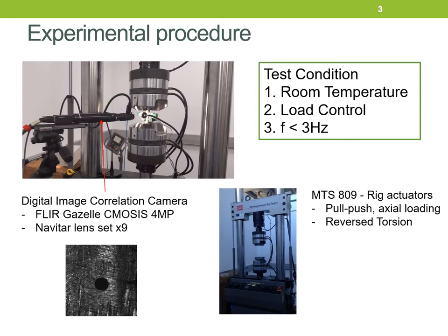In the next slide, it is shown the experimental procedure. Tests were performed at room temperature with load control and a frequency below 3 Hz to avoid extensometer pin slide. Digital image correlation technique was applied to obtain stresses and strains on the specimen surface and also track the crack growth. The camera used was a 4-megapixel camera with a set of lenses giving a suitable magnification.